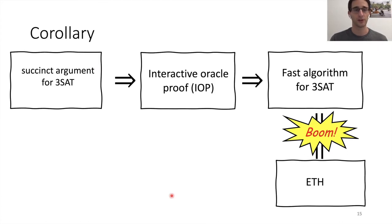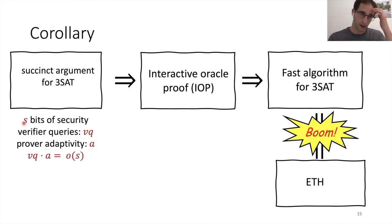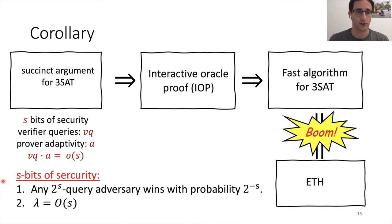So our corollary says that it's very unlikely to have such SNARGs where the verifier makes 10 or a small number of queries to the random oracle. So if you start with a SNARG with S bits of security, and here this is really a shorthand just to say that if you make 2^S queries, then the probability of winning is at most 2^(-S) and our security parameter is O(S). So just think of S as like 128 bits of security. And the verifier complexity is VQ, and the prover adaptivity is A. If this condition holds VQ times A is little o of S, then you get a very good IOP, which implies a very fast algorithm for 3-SAT and this contradicts ETH.